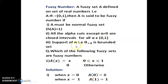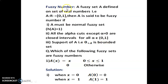Condition 3: The support of A, i.e., the strong 0-cut of A, is a bounded set. Bounded means that for a given interval, if the first and last values are finite or real numbers, we say it is bounded. If we get an infinite value, then it is unbounded. To check whether a given example is a fuzzy number or not, all three conditions must be satisfied.